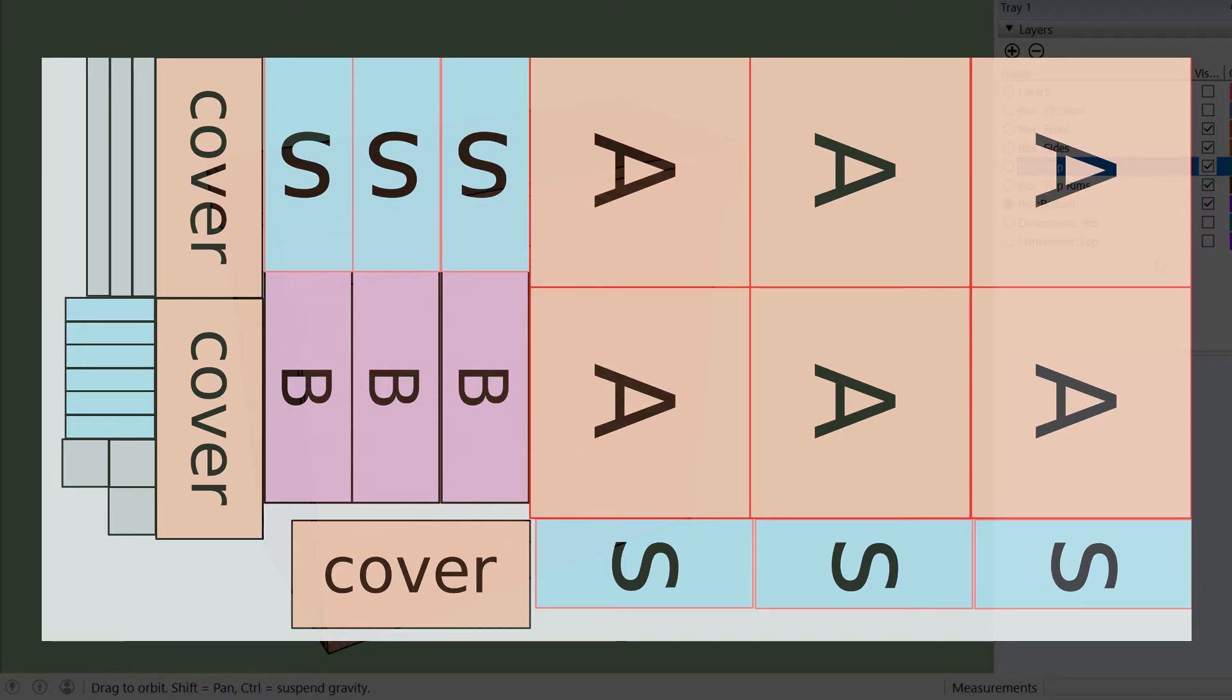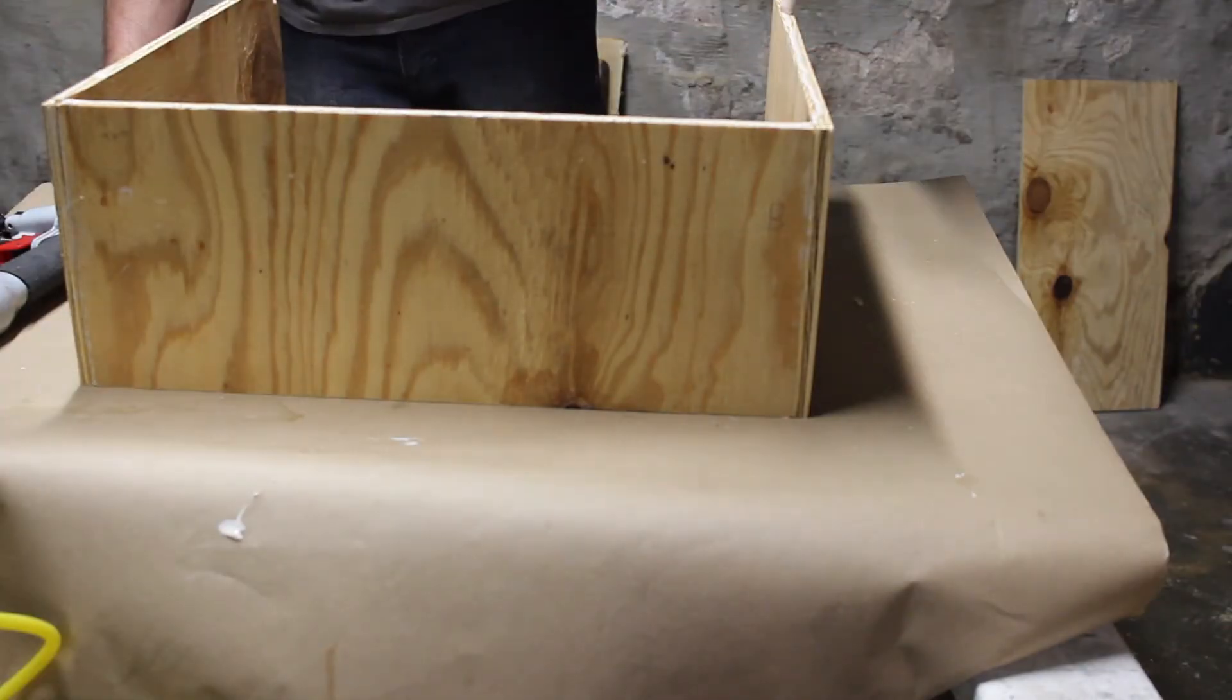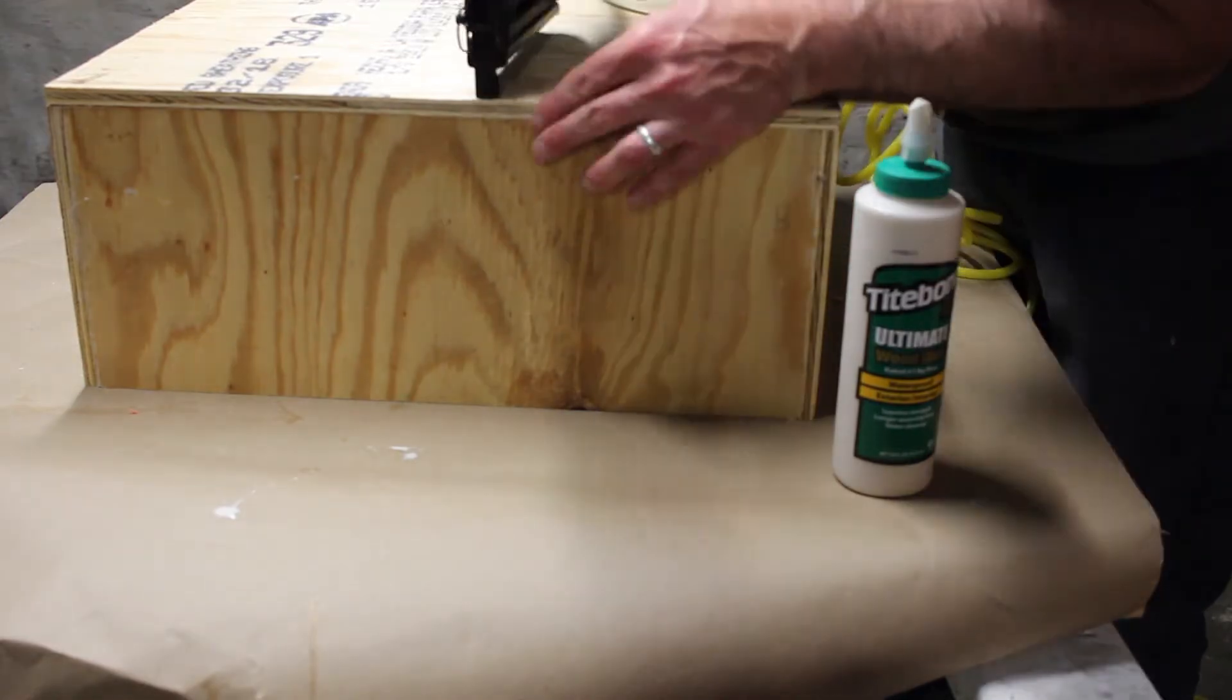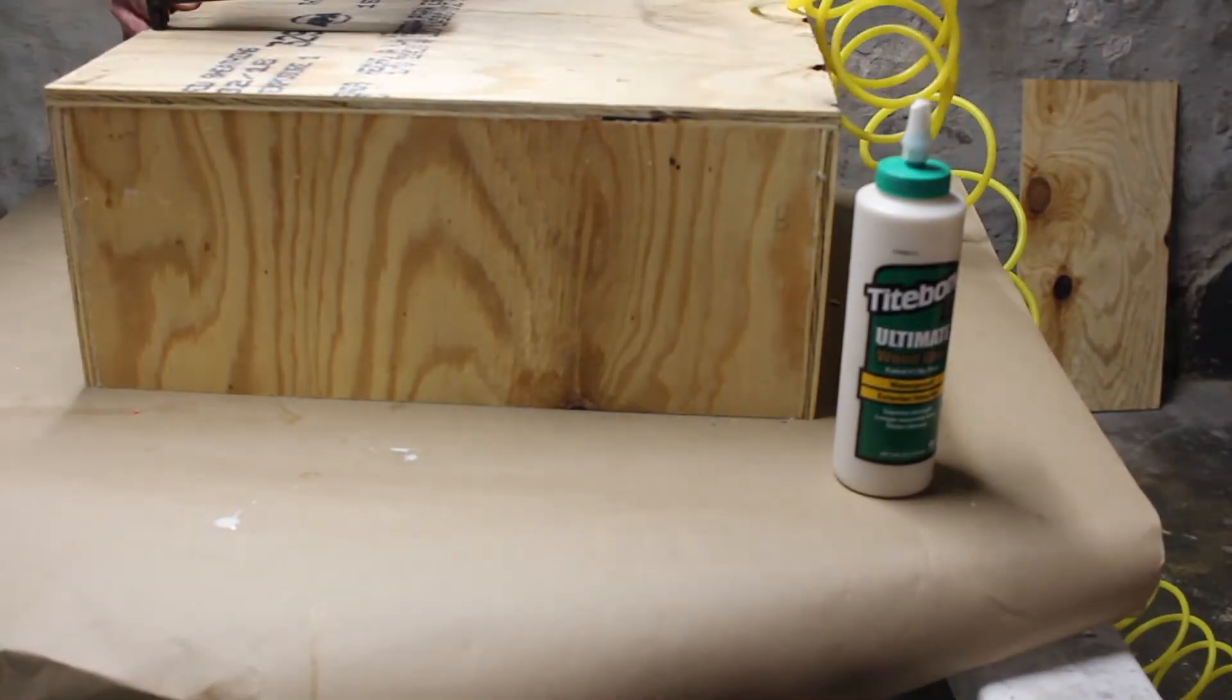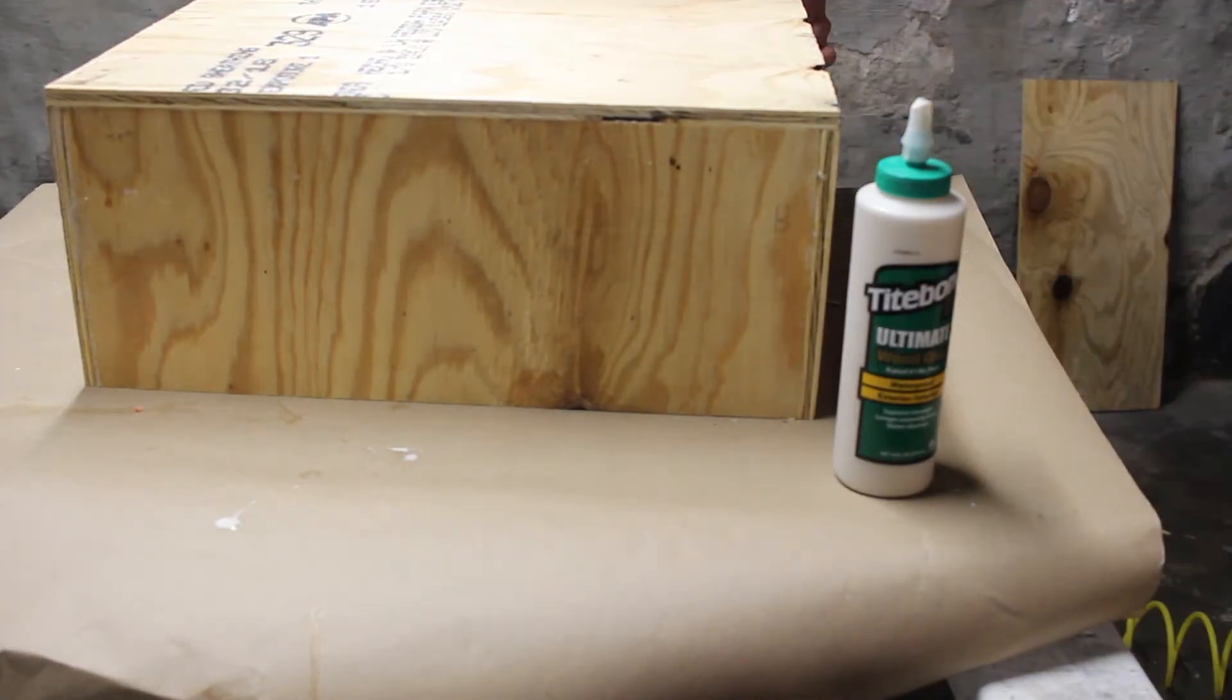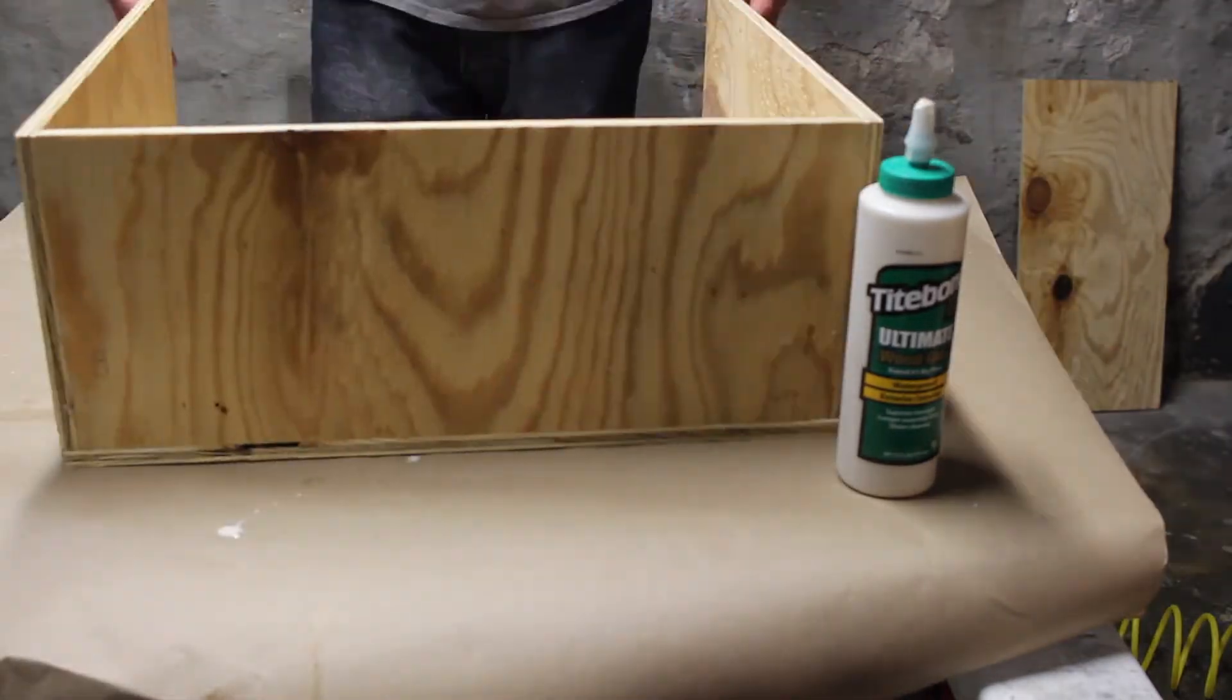A single sheet of 15/32nds plywood has enough material for three traps. Once all the pieces were cut, I assembled everything with 18 gauge brads and Tight Bond 3 wood glue. Tight Bond 3 is a weatherproof glue so it should hold up well to the elements. A nail gun like I'm using here is relatively inexpensive and it really comes in handy for projects like this.